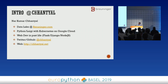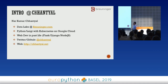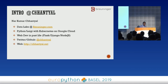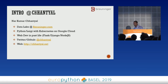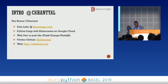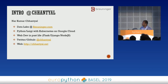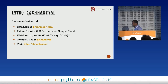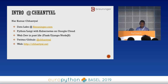Before we start, a few things about me. My name is Nor Kumar. I'm currently working at Breininger, a traditional fashion house mostly popular in South and West Germany, which is currently expanding in the online e-commerce space quite rapidly. I work with the data lake team using Python, Luigi with Kubernetes running on Google Cloud.